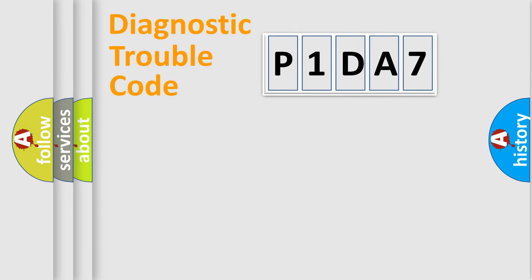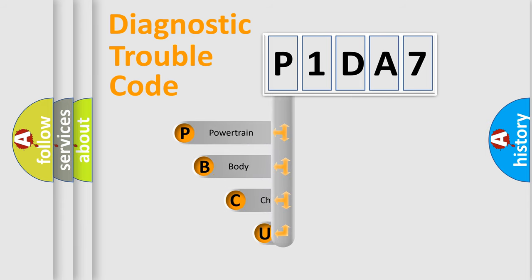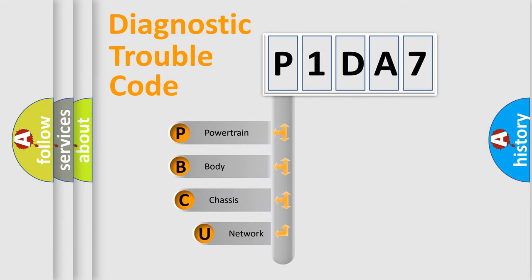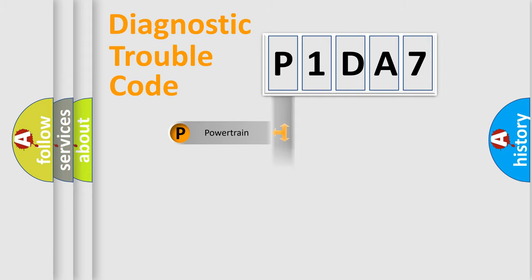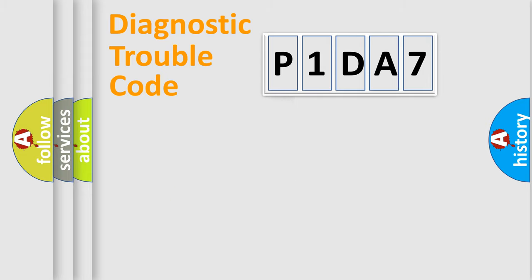Let's do this. First, let's look at the history of diagnostic fault code composition according to the OBD2 protocol, which is unified for all automakers since 2000. We divide the electric system of an automobile into four basic units: Powertrain, Body, Chassis, and Network.